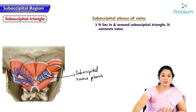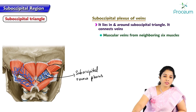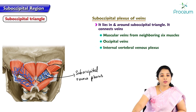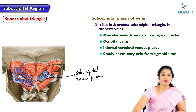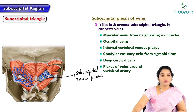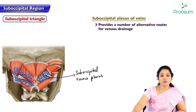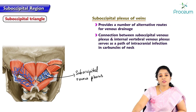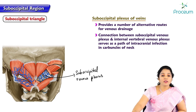It connects the muscular veins of the neighboring muscles, occipital veins, internal vertebral venous plexus, condylar emissary veins from the sigmoid sinus, deep cervical vein, and plexus of veins around the vertebral artery. Hence this venous plexus provides a number of alternative routes for venous drainage. The connection between the suboccipital venous plexus and internal vertebral venous plexus serves as a path of intracranial infections in carbuncles of the neck.